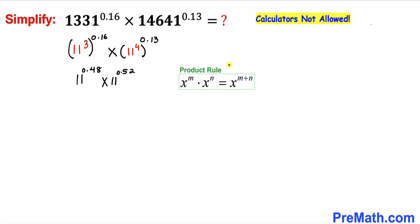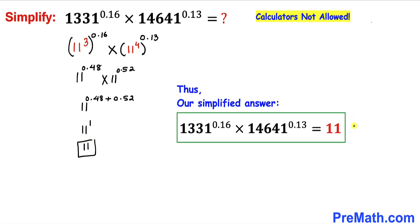And now let's recall the product rule of exponents. Since our bases are the same, we are going to add their exponents, as you can see in this next step. And now if we add 0.48 plus 0.52, that is going to be equal to 1. Therefore we got 11 power 1, which is same as 11. So thus our simplified answer turns out to be 11.